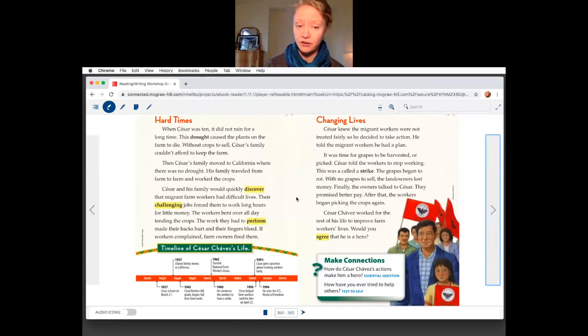So in 1927, that's when Cesar was born. It's the beginning of his biography. You have 1937 was when his family moved to California. You can do some math and figure out that he was 10 years old, just like they said in the story. So you can go through date by date. It's a way to see in a kind of clear visual way the order of events.